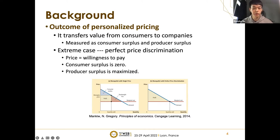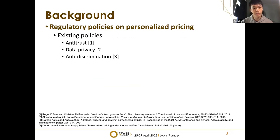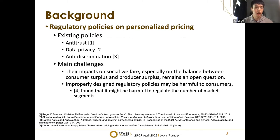Perfect price discrimination is increasingly possible due to the availability of increasing amounts of consumer data, so we should design proper policies to regulate this kind of price discrimination. There are several directions to design regulatory policies, including antitrust, data privacy, and anti-discrimination. However, the policy impacts on social welfare — especially on the balance between consumer surplus and producer surplus — remains an open question. Improperly designed regulatory policies may be harmful to consumers.